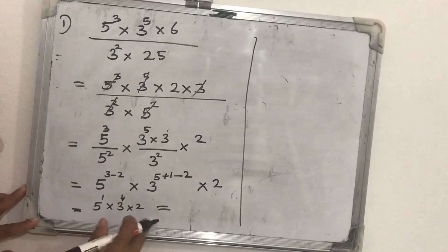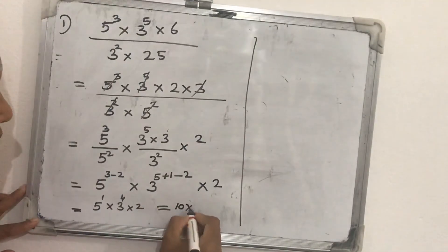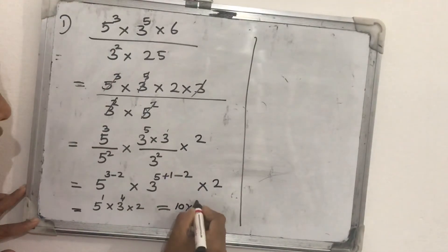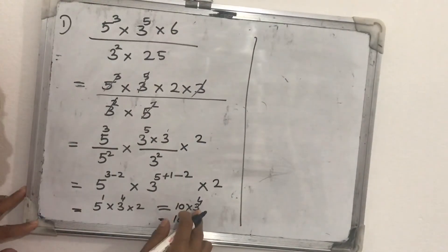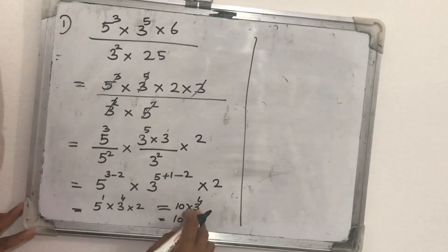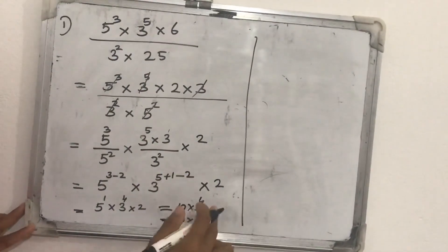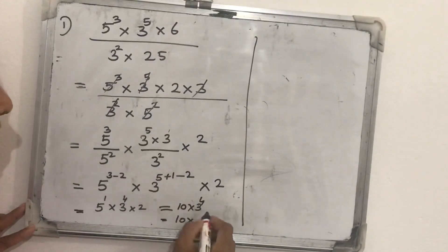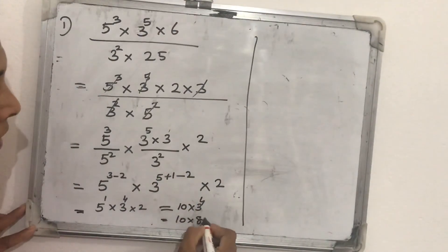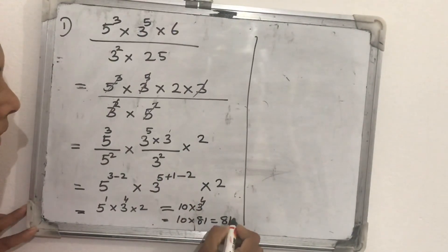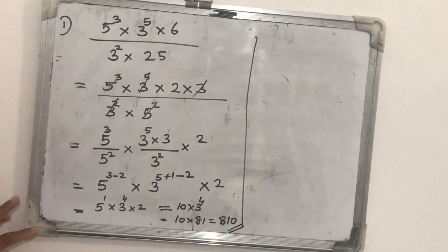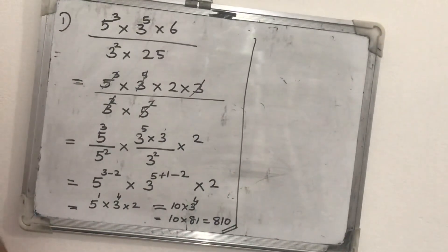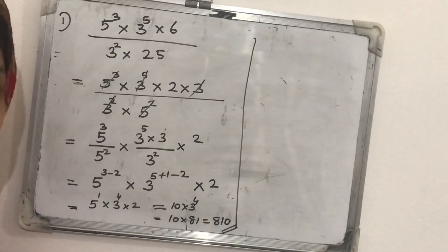Five raised to one means five itself. Five times two is ten. Now, three raised to four: three squared is nine, and nine times nine is eighty-one. So ten times eighty-one gives the answer eight hundred and ten. This is how we can simplify any question using the laws of exponents. Thank you.